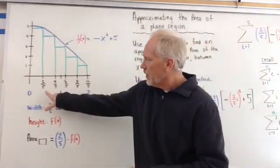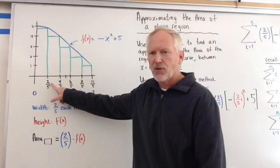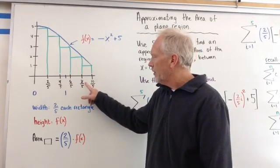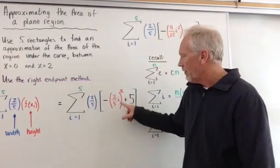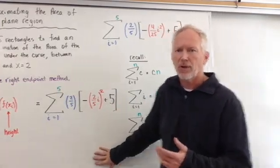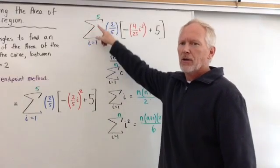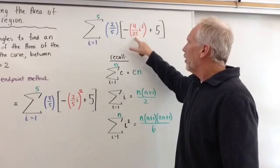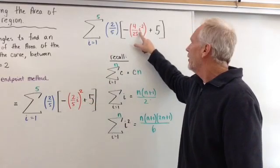So inside the summation we have negative 4/25 times i squared plus 5 — that comes from substituting x sub i equals (2/5)i into negative x squared plus 5: 2/5 squared is 4/25, giving us negative 4/25 times i squared. Now recall the summation formulas: the sum of a constant is the constant times the upper bound n; the sum of i is n(n+1)/2; and the sum of i squared is n(n+1)(2n+1)/6. We need those here.